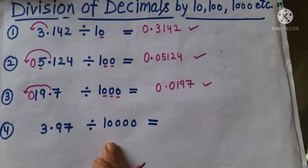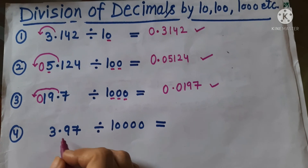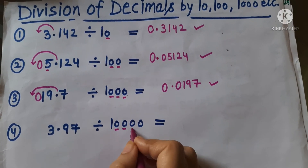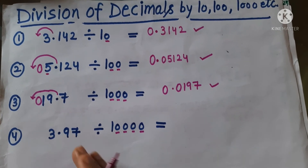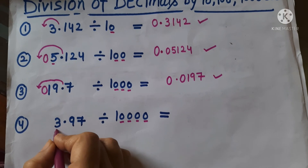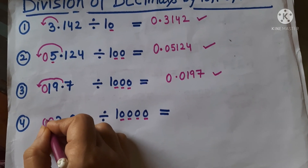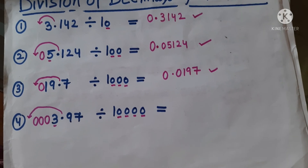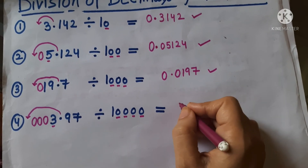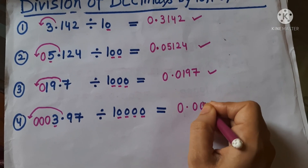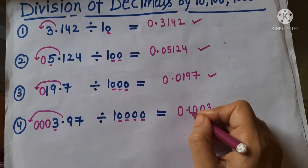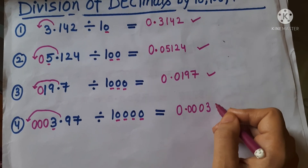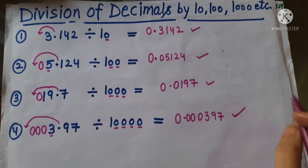Let's move on to the last one. Here we have 3.97 which is going to be divided by 10,000. 10,000 means we have 4 zeros. So our decimal will also move to the left up to 4 places. Here we have only one place, so we will put 3 zeros to the left side and our decimal will be shifted to the left 4 places. So the answer is 0.00397 — 3 zeros because we have shifted up to 4 places. Yes, I think you got it.